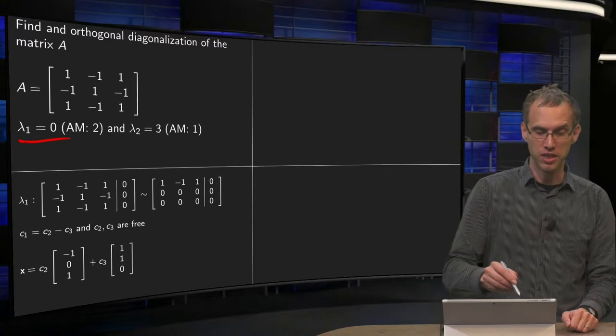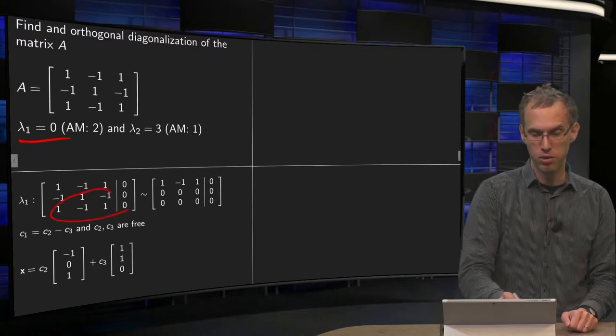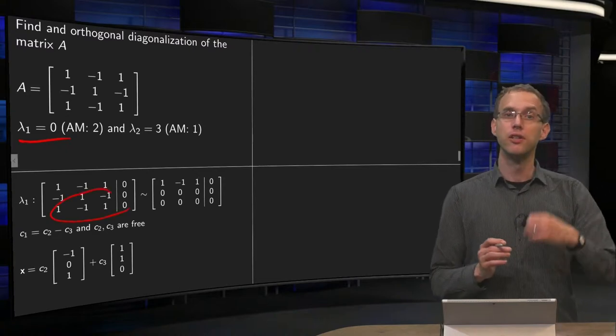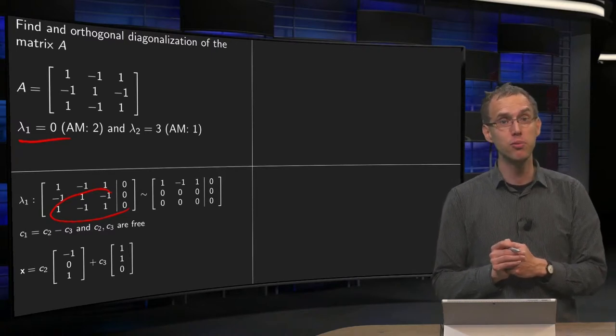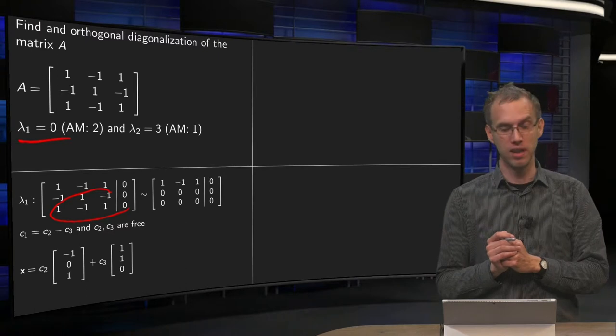And the row reduction, that's easy in this case because the lower two rows drop out immediately. So we see that our eigenvalue has a geometric multiplicity of 2, so we find two independent eigenvectors.